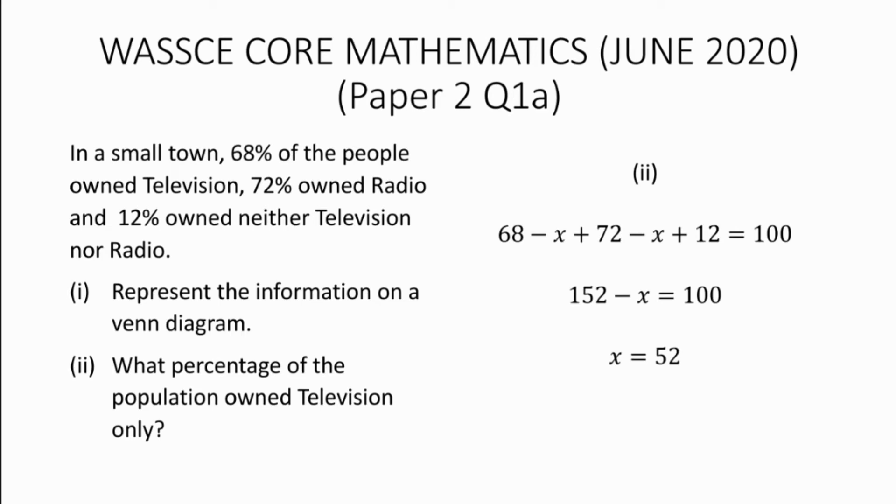So we have 52% which represents the percentage of population who owned both television and radio. So the percentage of the population that owned television only will be equal to 68% minus x which is now 52%, which will give us 16%.